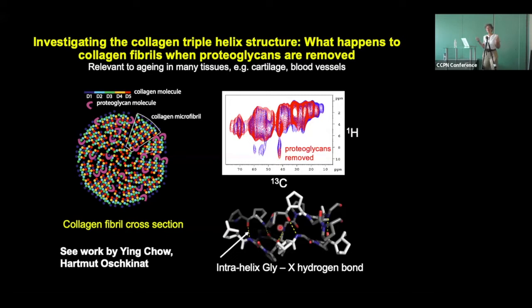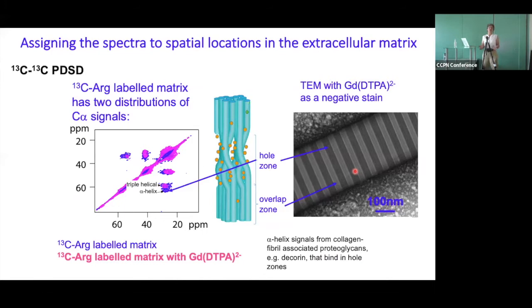When we washed out from the collagen fibril its native proteoglycans, which normally help to hold the fibril together, we see the signal move to higher chemical shift — i.e. stronger hydrogen bonding. In other words, the triple helix is shrinking in on itself when we remove the proteoglycans; it becomes stiffer. This is the first message on why you really need to be using native tissues if you want to study native structures. Assigning the chemical shift spectrum when you're dealing with a native tissue is somewhat of a problem, because we haven't got just collagen — there's fibronectin, a whole range of proteoglycans, and in some tissues elastin.